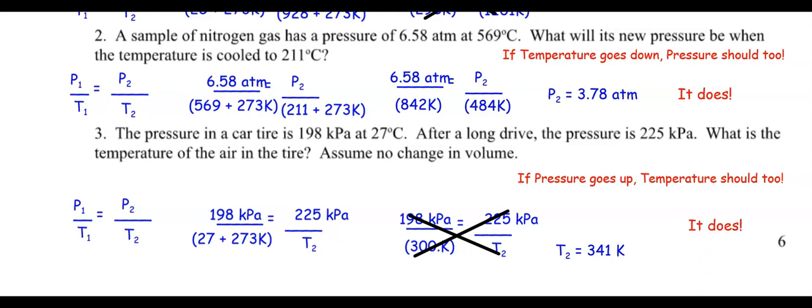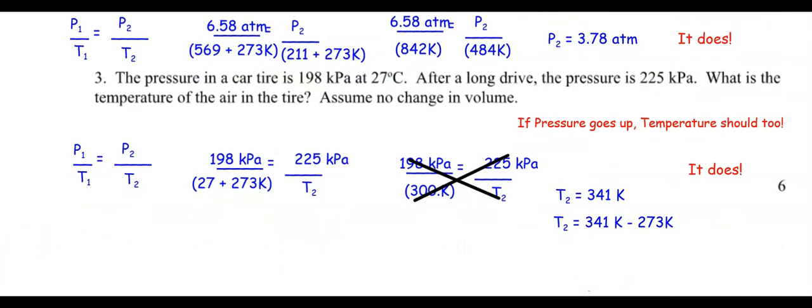But wait a minute. What do I want? You know, I know what that is in Celsius. So how do I convert from Kelvin to Celsius? I don't add 273, I subtract 273. And so I got 68. So yeah, it did go up.